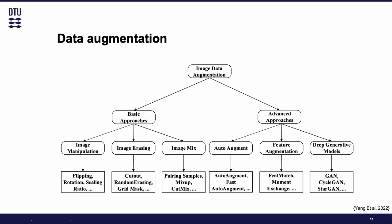Now let's focus on the background. The fundamental topic that we need is data augmentation. The idea is to increase the diversity of the training data in order to teach the model to deal more accurately with real data. We have some basic and some more advanced approaches. Basic approaches include image manipulation, image erasing, and image mix. Advanced approaches include auto augment, which automatically searches for the best combinations of transformations to create a policy, and feature augmentation, which performs transformations in a learned feature space. In this work, we are going to focus on deep generative models.